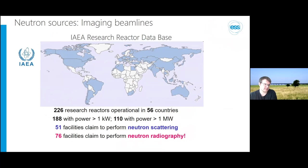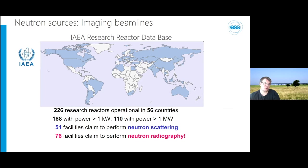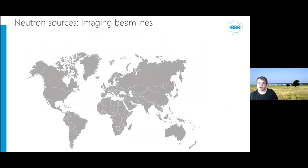After that first reactor, there are now over 200 research reactors worldwide. According to an IAEA overview, many do isotope production and many do neutron scattering and imaging. Interestingly, more facilities claim to do neutron imaging than neutron scattering, which is somewhat opposite to what large-scale facilities offer. The main reason is probably that basic neutron imaging is very simple — in principle you just need a detector and you can claim to do imaging.